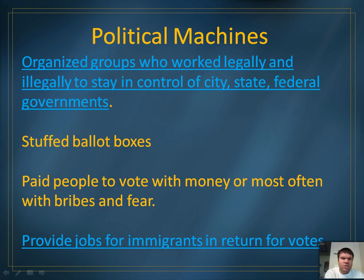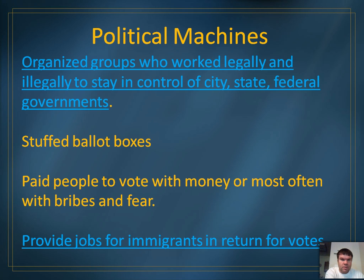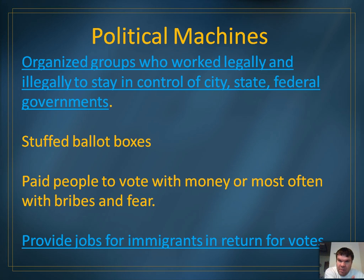One of these problems was political machines. Political machines were not actual machines, but they were organized groups of people who worked legally and illegally to stay in control of city, state, and federal governments. Oftentimes, political machines stuffed ballot boxes, meaning they illegally voted more than once. They also paid people to vote with money, or bribed them with jobs or fear of losing a job. These machines provided jobs for immigrants in return for votes, and taught immigrants English — but the first thing they taught them was how to read a ballot and the names of the candidates they wanted them to vote for.